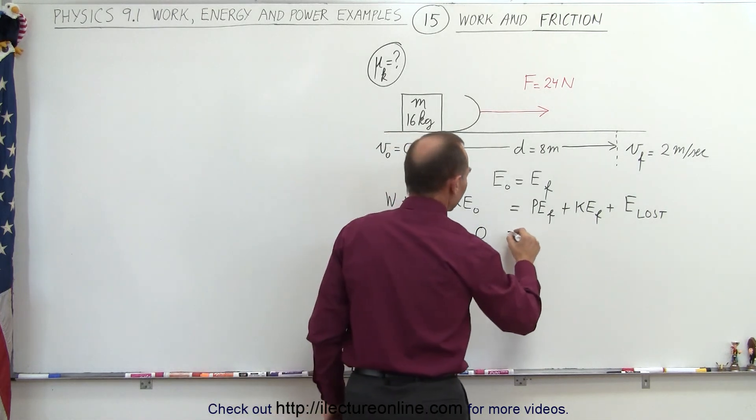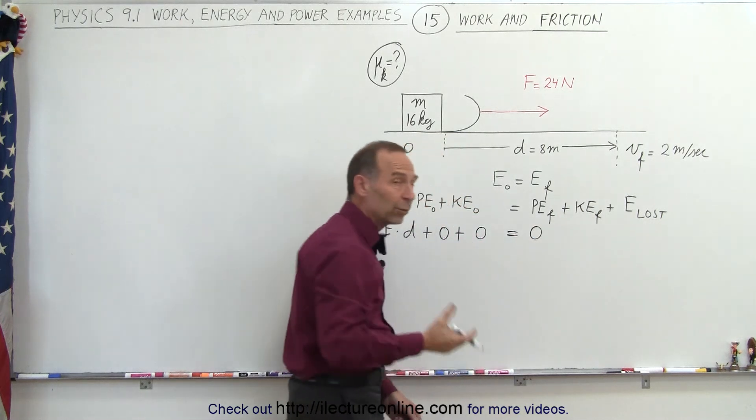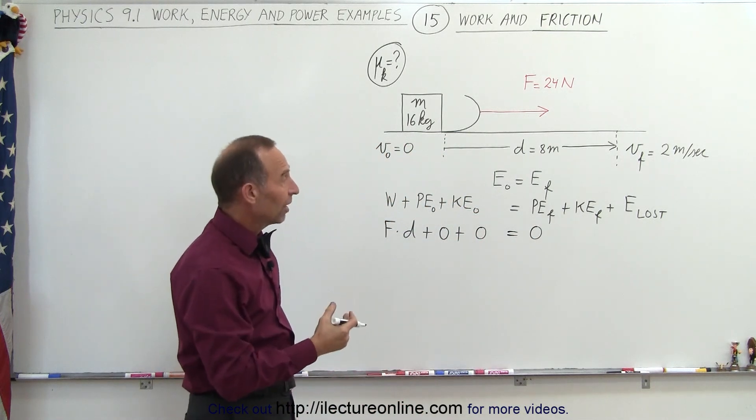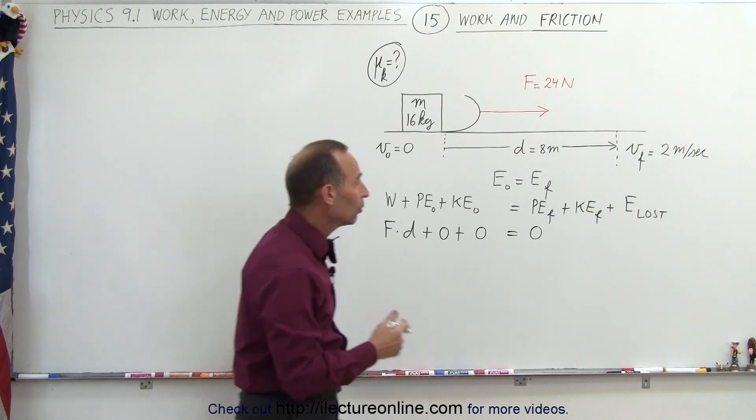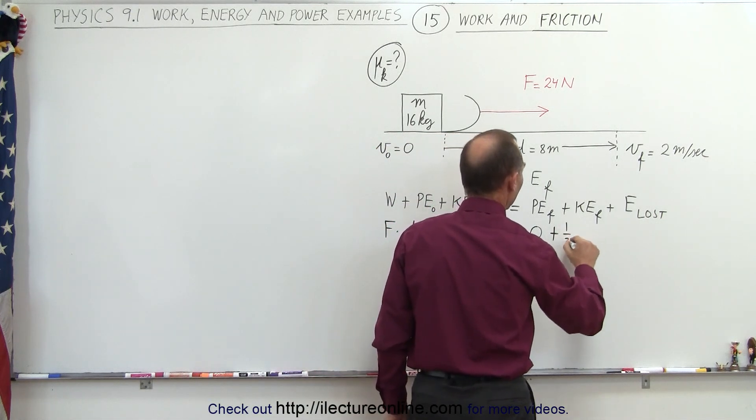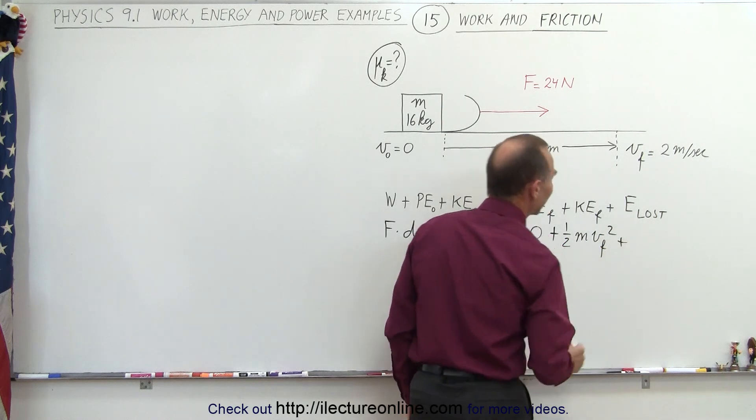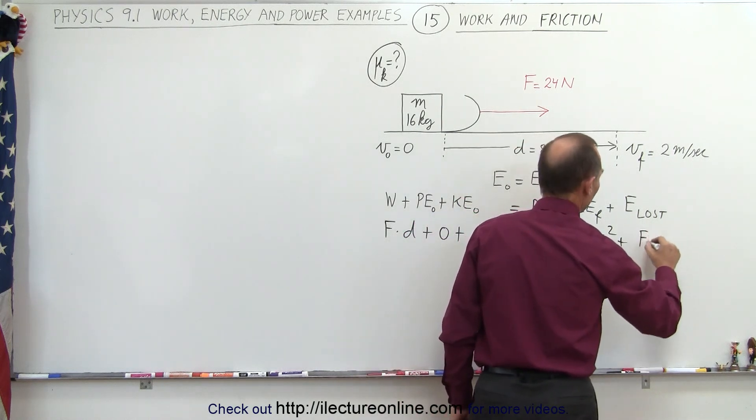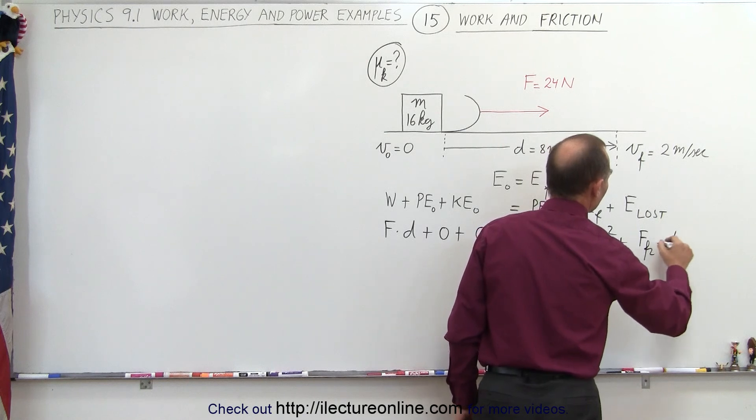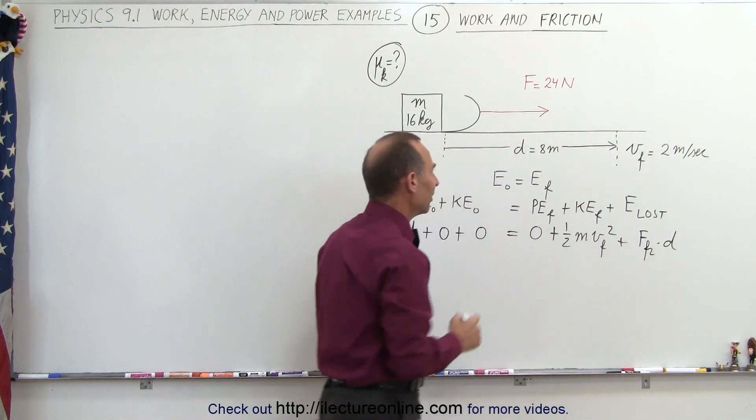As far as the potential energy final, again, it's zero because no height was gained, but it does have velocity at the end. So there is some final kinetic energy, that would be plus one half m v final squared plus the energy lost, which is the friction force multiplied times the distance, the distance again being eight meters.